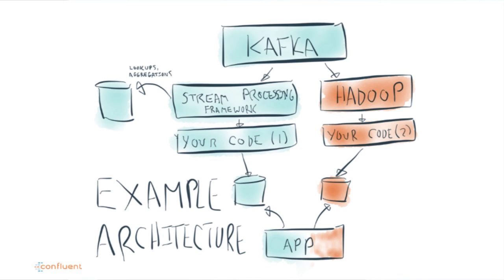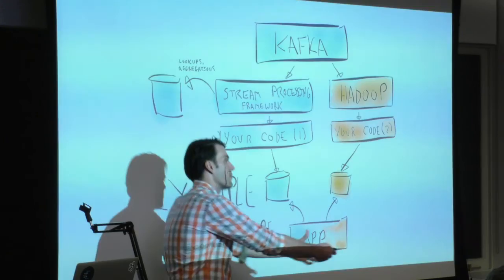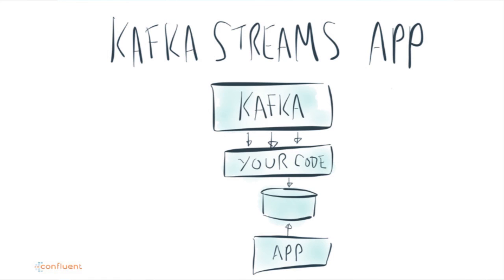Coming back to the complicated stream processing architecture — we've tried to make it a lot easier. We've moved aggregates into the stream processor so they come out of the box. We've made it so you can take the same stream processing job and rerun it on your data instead of maintaining a separate offline system. You basically have the Kafka cluster and your code — no intermediate framework required, though if you already have Mesos that's great. Hopefully this is fewer moving parts.